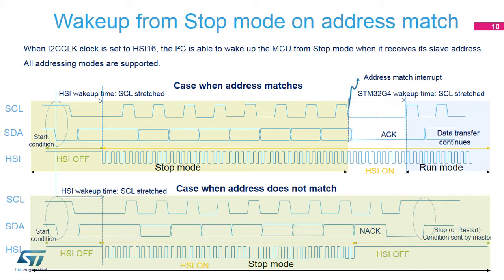The I2C peripheral supports wake-up from stop mode on address matches. To do this, the I2C peripheral clock must be set to the HSI-16 oscillator. Only the analog noise filter is supported when the wake-up from stop feature is enabled. All addressing modes are supported. When the device is in stop mode, the high-speed internal oscillator is switched off. When a start condition is detected, the I2C peripheral enables the high-speed internal oscillator, which is used to receive the address on the bus. After an address is received in stop mode, a wake-up interrupt is generated if the address matches the programmed slave address. If the address does not match, the high-speed internal oscillator is switched off, no interrupt is generated, and the device remains in stop mode.